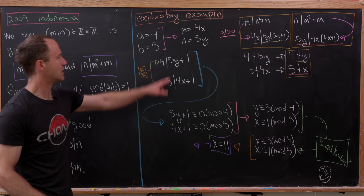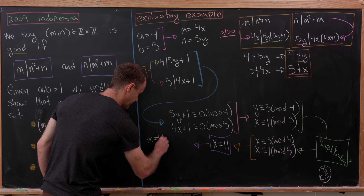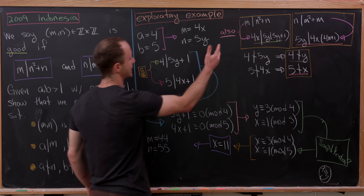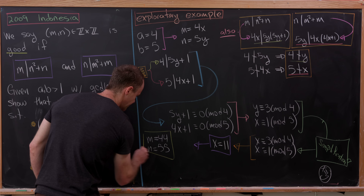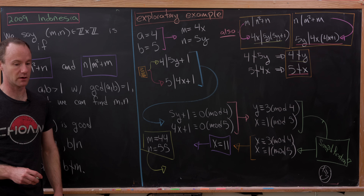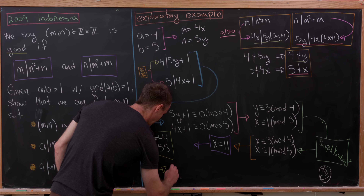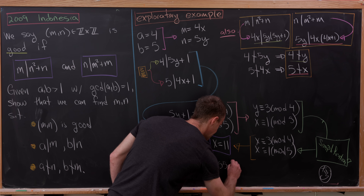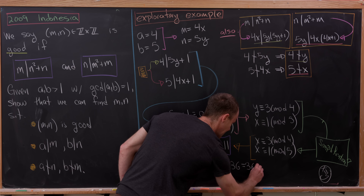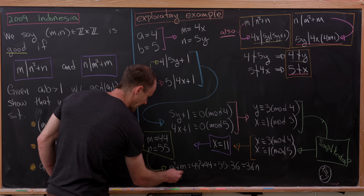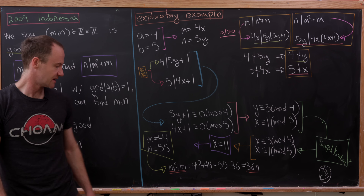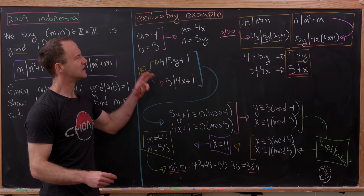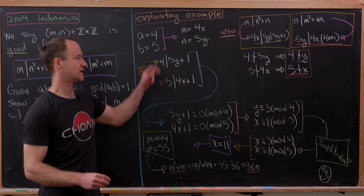With x = 11, we get m = 44 and n = 55. We just have to check those are good. We can verify that m² + m = 44² + 44 = 55 · 36 = 36n, so n divides m² + m. That confirms the goodness condition — all of this follows from our original construction, but it's nice to check we haven't made a mistake along the way.